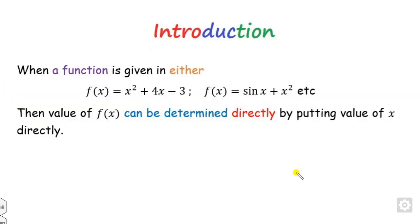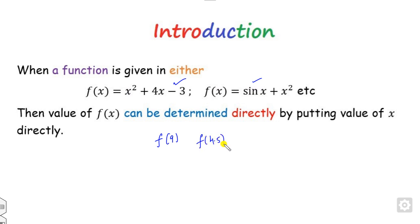First of all, what are the advantages of the Lagrange interpolation formula and why we need it? For example, if there is some function given explicitly, then you can easily find the value of say f(9), f(4.5), and so on by directly substituting the value of x into those formulas.